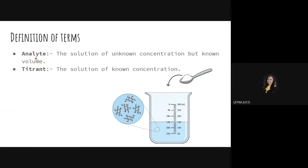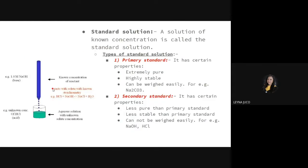The analyte is what we're looking for. We also have the titrant, which is the solution of known concentration. We use the titrant as a basis — how much titrant was used tells us how much analyte there is. We also have the standard solution, which is a solution of known concentration; it can also serve as our titrant. Types of standard solution: primary standard, which is extremely pure, highly stable, and can be weighed easily — example is sodium carbonate. Secondary standard is less pure, less stable, and cannot be weighed easily — examples are sodium hydroxide and hydrochloric acid.